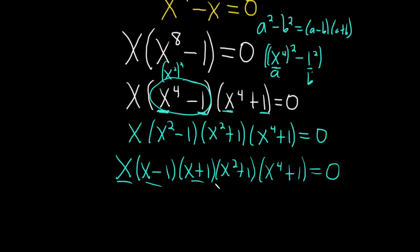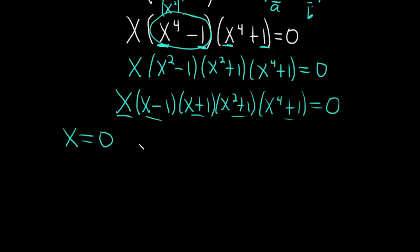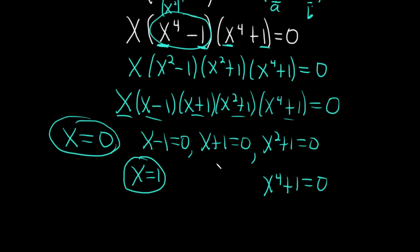So we set each of these factors, each one of these equal to zero. So we have x equals zero. Let me give ourselves some more room here. Then we have x minus one equals zero. Then we have x plus one equals zero. Then we have x squared plus one equals zero. And then lastly, we have x to the fourth plus one equals zero. So here's one answer, x equals zero. You add one here, you get x equals one as another answer. You subtract one here, you get x equals negative one as another answer.